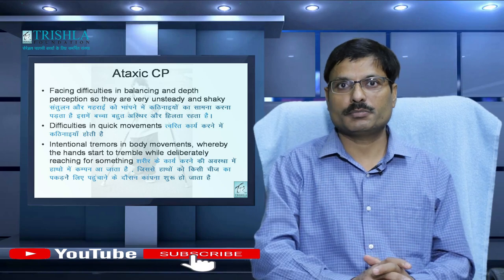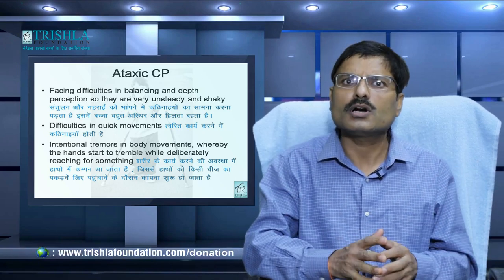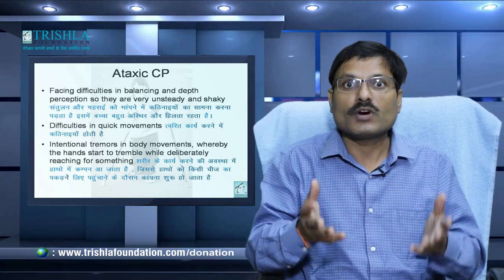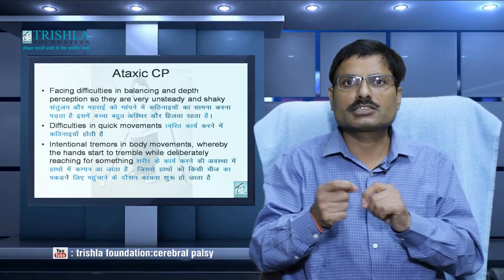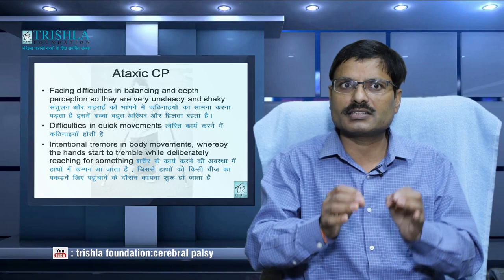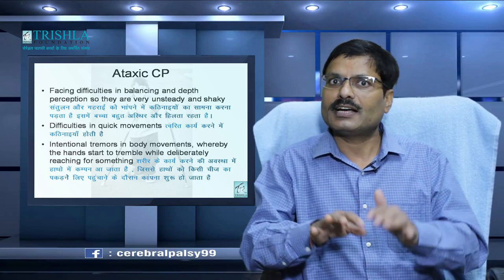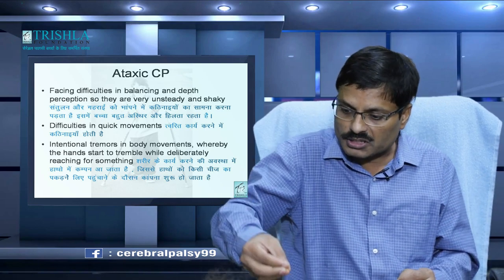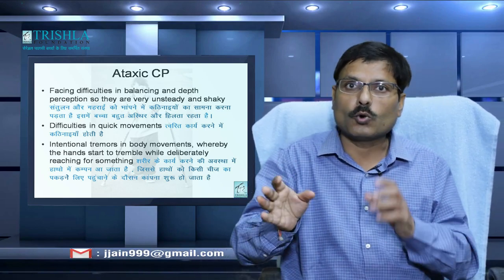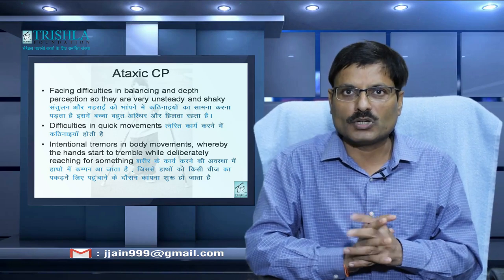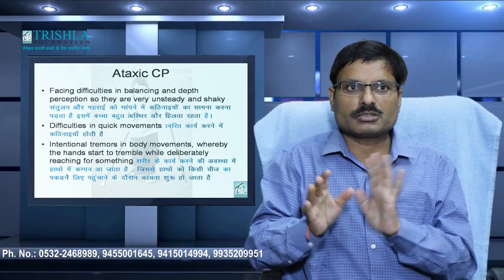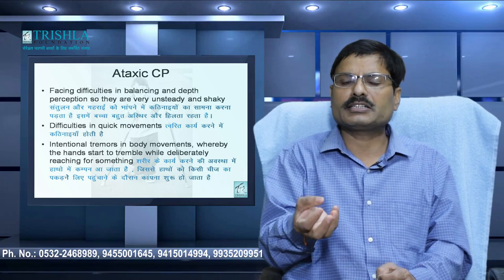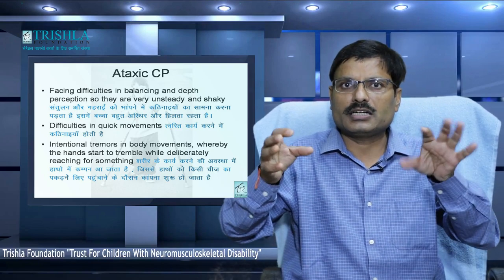Ataxic cerebral palsy children look like they are drunk — they do not have proper gait patterns. They cannot judge depth perception — where to put the foot on the ground. They face difficulty in balancing and depth perception, so they are very unsteady and shaky. When they walk they have a very broad-based gait. They have difficulty with quick movements — the whole body is very shaky and balance is very poor. The vestibular system and cerebellar system are not working properly. There is intention tremor in body movements — the hand starts to tremble when reaching for something.